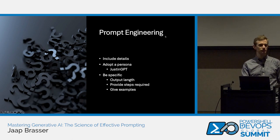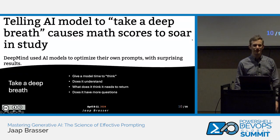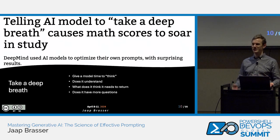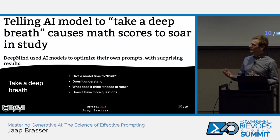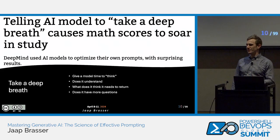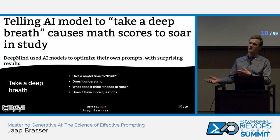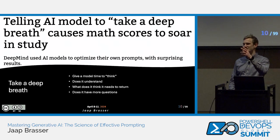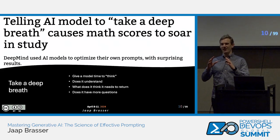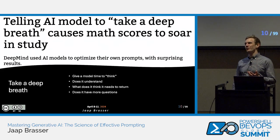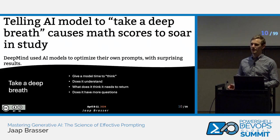Here's one I thought was quite funny — you can ask the model to take a deep breath. Statistically, it would come up with better results whenever you ask it math questions. I've done this myself, specifically with image generation. If you're not familiar with DALL-E, it's actually not very good at putting text in images. I would prompt it to take a deep breath and really think about what it's going to output, and it would still mess it up. Doesn't always work. But the takeaway is: give a model time to think.